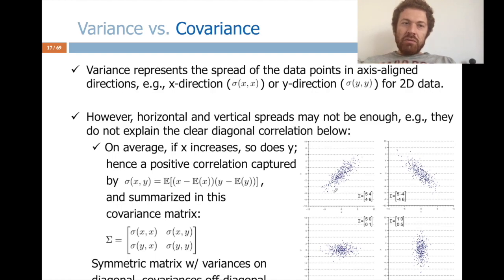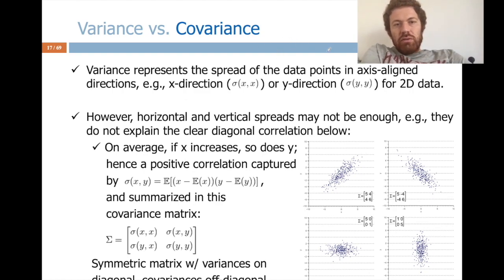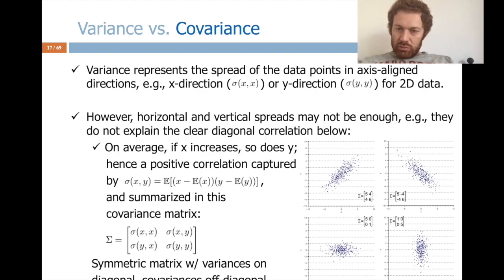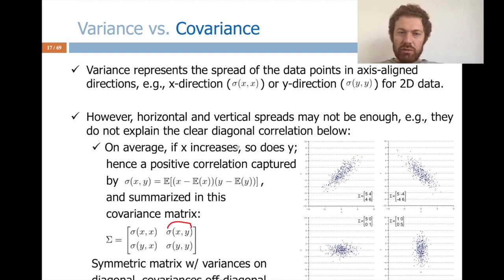Covariance is useful for non-axis-aligned directions. Sometimes data comes in irregular formats where variation is not along one axis. In this case, when x increases, so does y — there is positive covariance between x and y. It is symmetric: if x increases so does y, and vice versa. Covariance between two attributes indicates whether they change together, in opposite directions, or not at all.